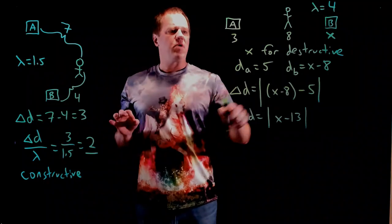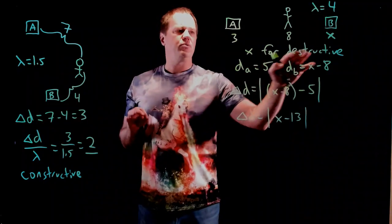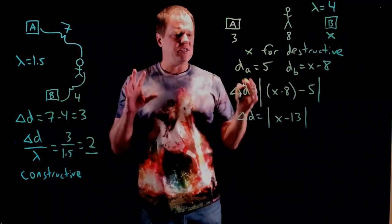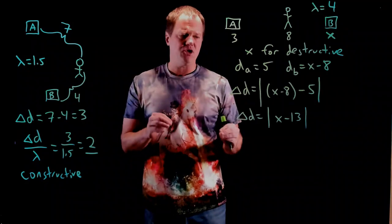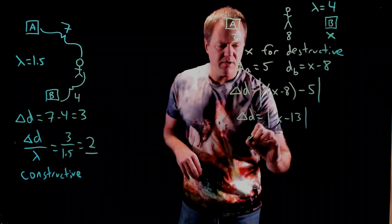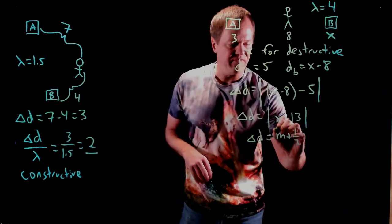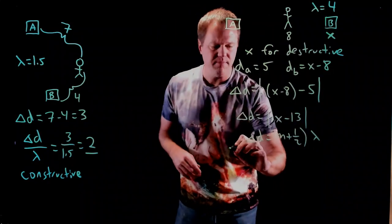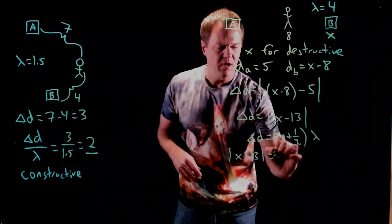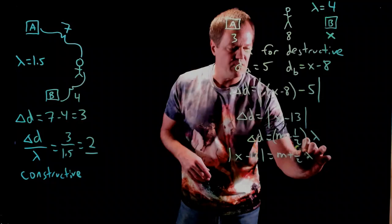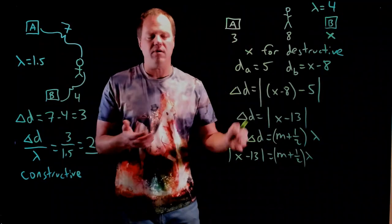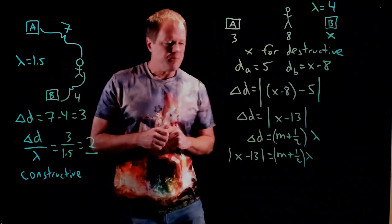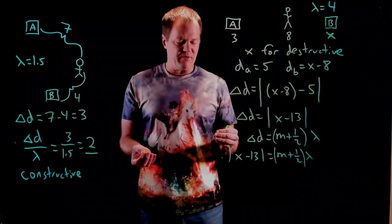The problem was we need to find the position of speaker B for which we get destructive interference for this particular observer. So, we set the path difference equal to a half integer multiple of the wavelength. Delta D equals m plus one-half times the wavelength. And then, we go ahead and throw in this for our delta D. So, x minus 13 absolute value will be m plus one-half times the wavelength. We would get right answers if we got rid of the absolute value sign, but we wouldn't get all of the correct solutions. So, I'm going to leave that there.